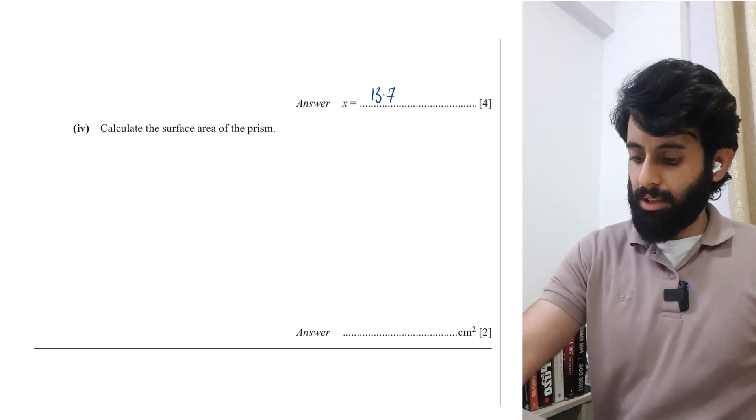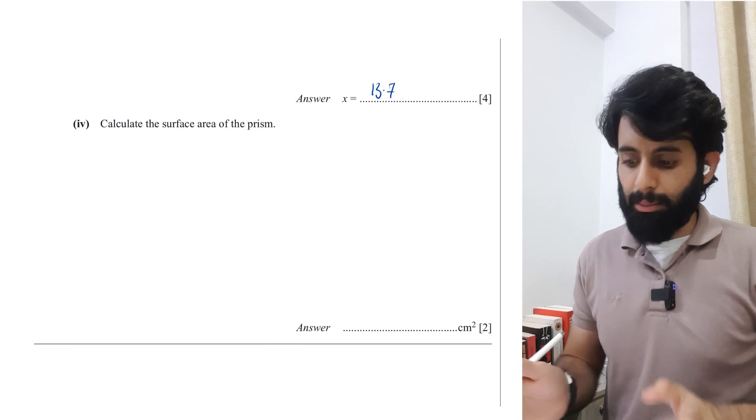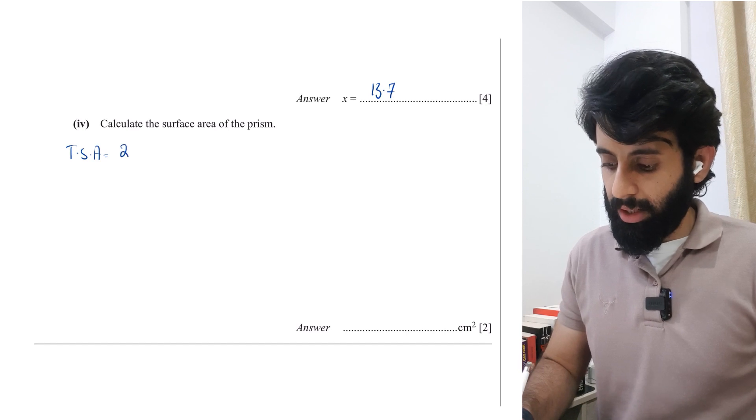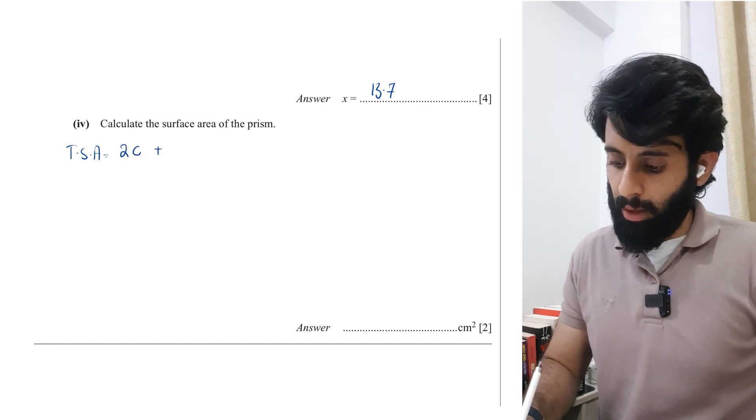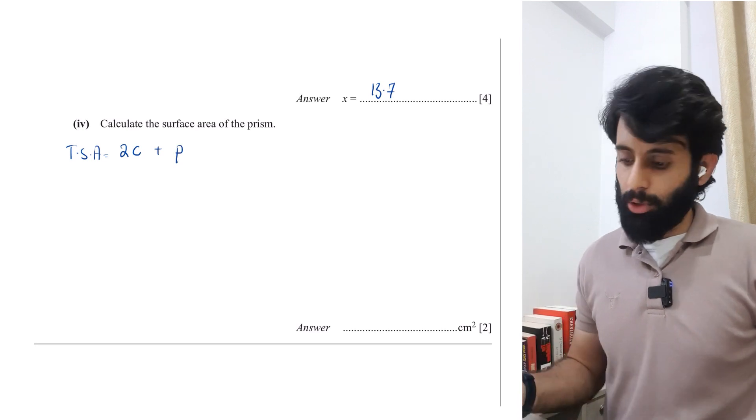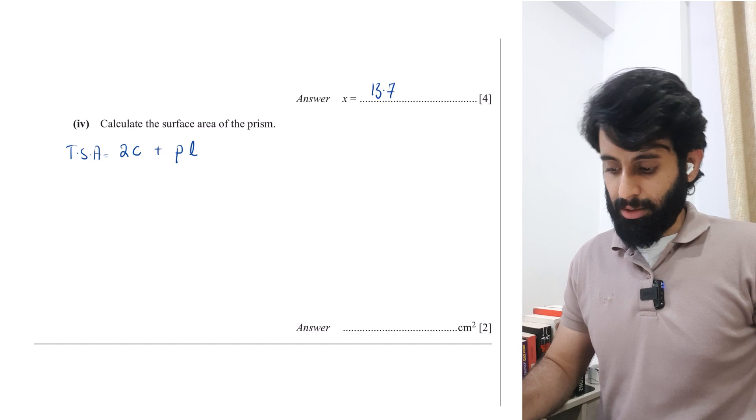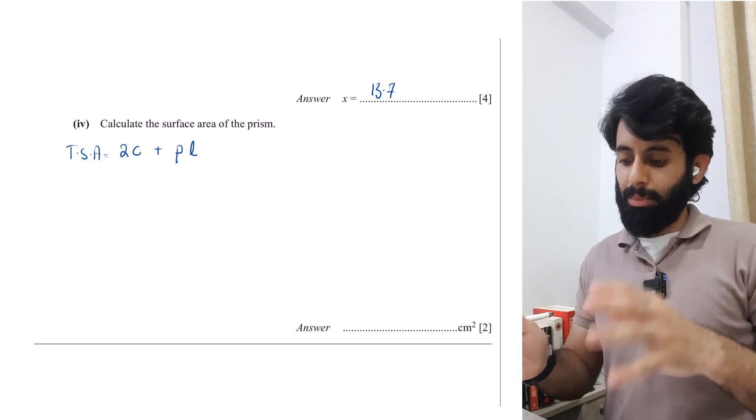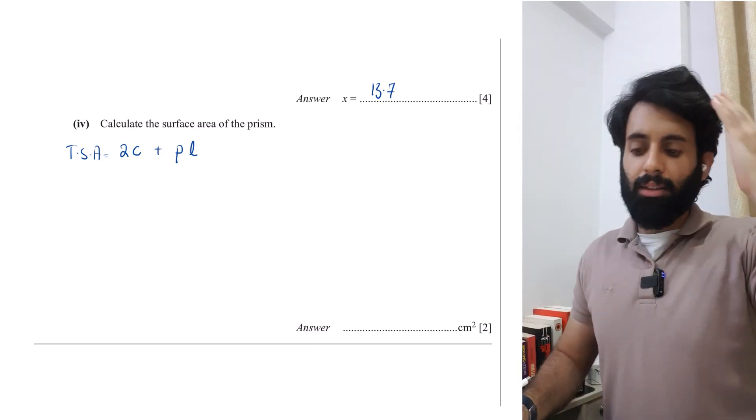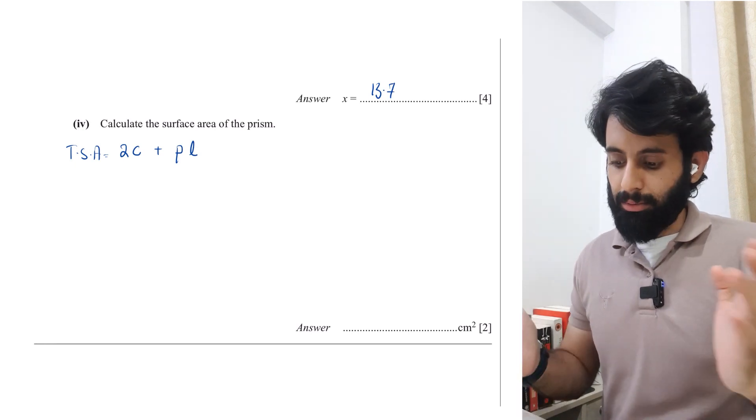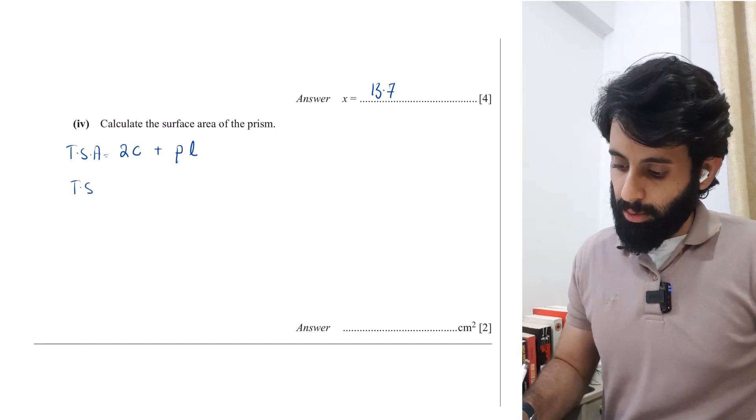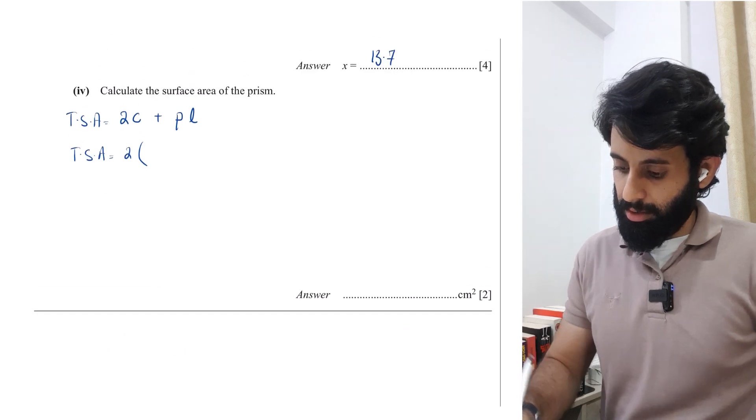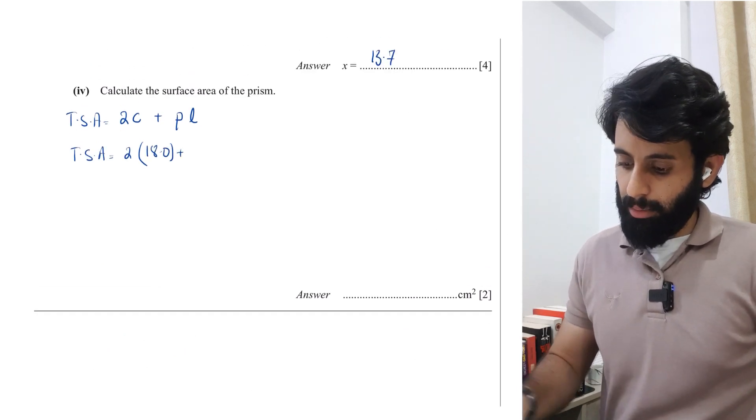Now comes the surface area of the prism. The formula that I'm going to use is as follows: total surface area of a prism equals 2 times area of cross section plus the perimeter of cross section, which in this case is the perimeter of triangle, multiplied by the length of the prism. This takes into account the two identical faces, and when you multiply the perimeter by the length, this takes into account all the three or four remaining faces depending on the prism.